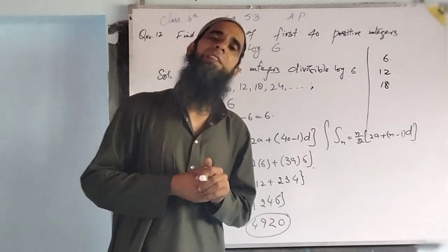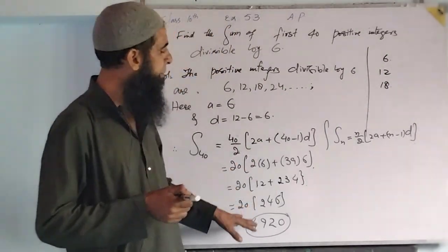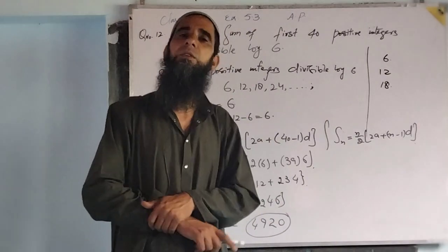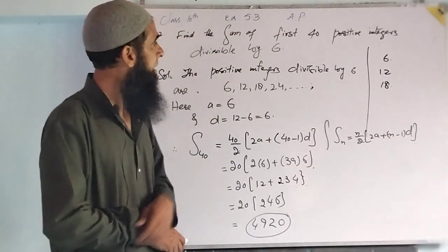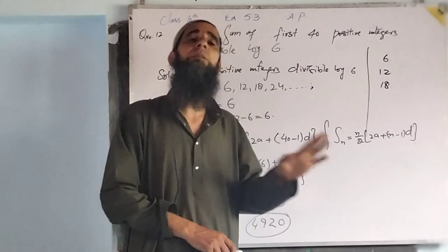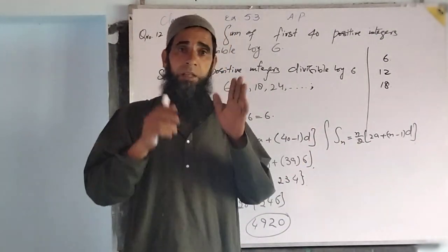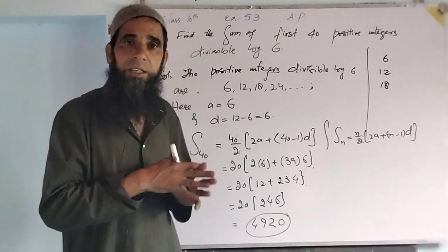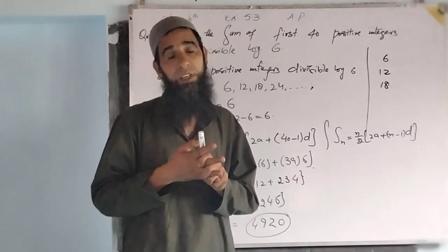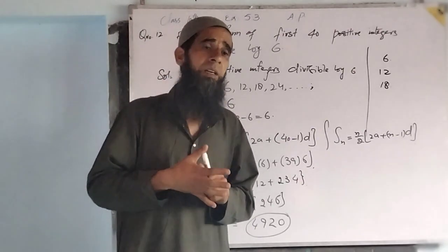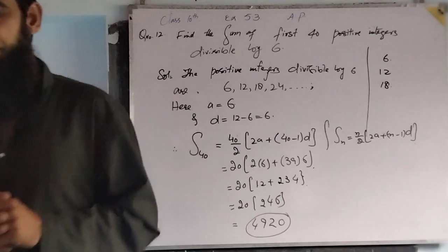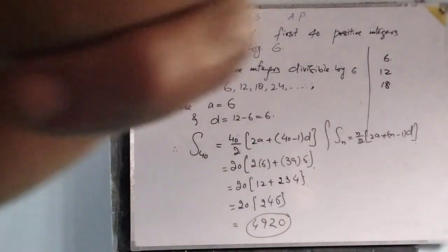Sum of first 40 positive integers which are divisible by 6 is 4920. Dear students, this is a very easy question and is very important for your exam. If you haven't already, please subscribe to my channel so that every next notification reaches you first, and share this so that other students can also benefit. Thank you, have a nice day.